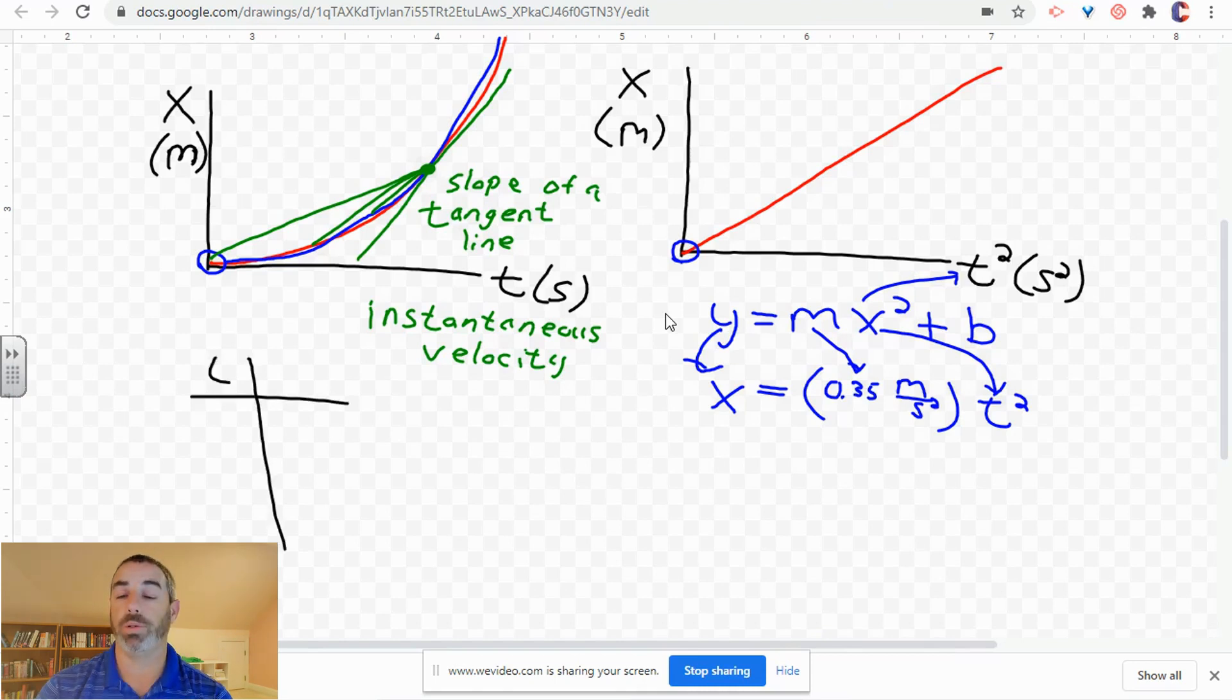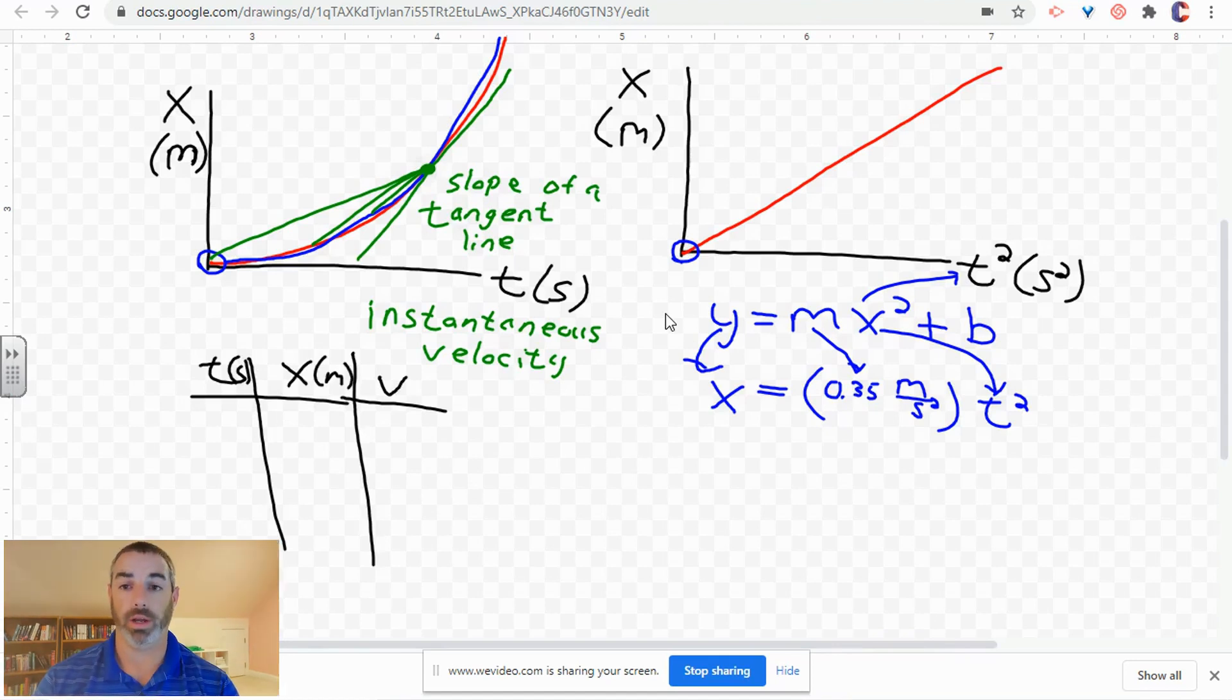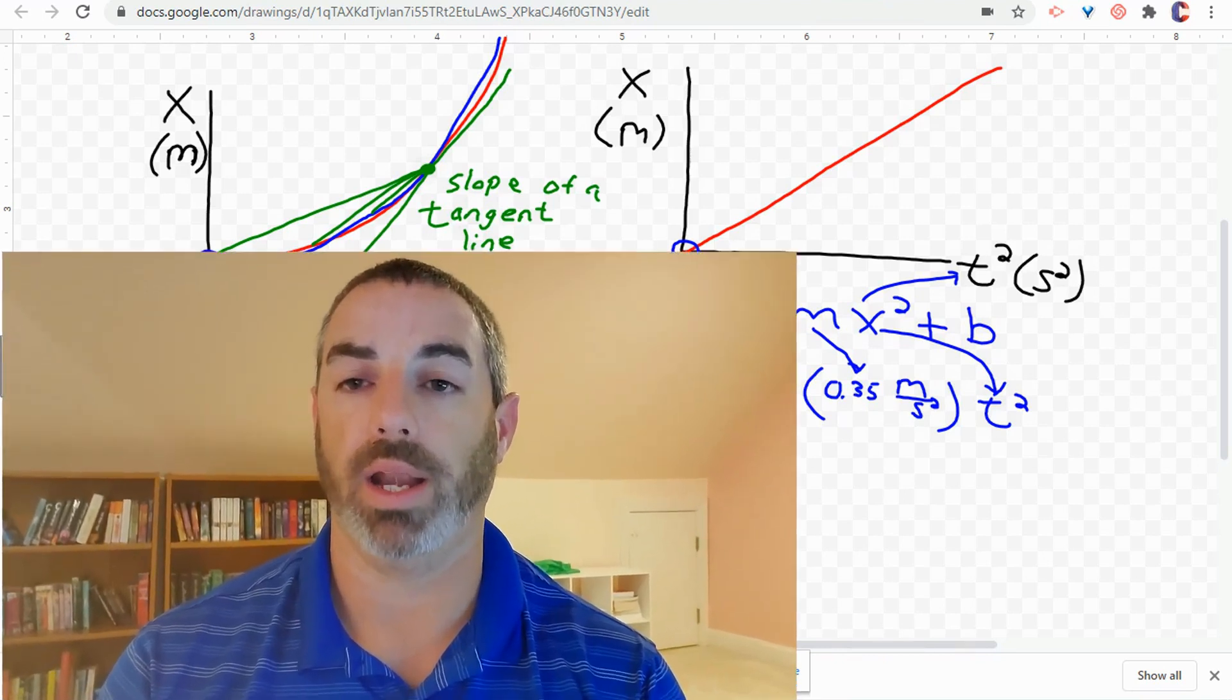What we are going to do now is we're going to go ahead and collect some data from our mathematical model by finding the slopes of tangent lines using our calculator. And those slopes will represent the instantaneous velocities, which we will write in this third column. So, we'll have time, position, and velocity data. From that, we are going to plot other graphs that we will look at in the next video.